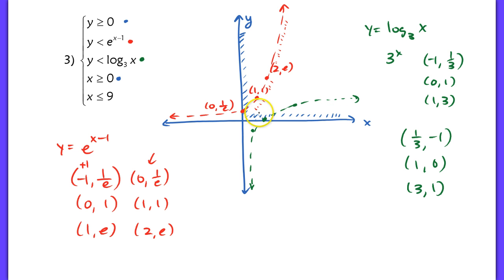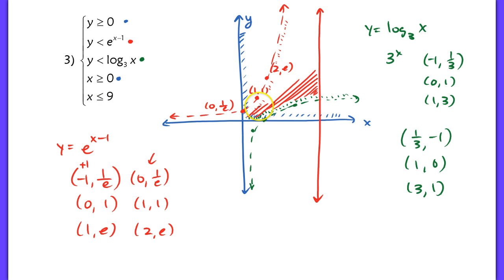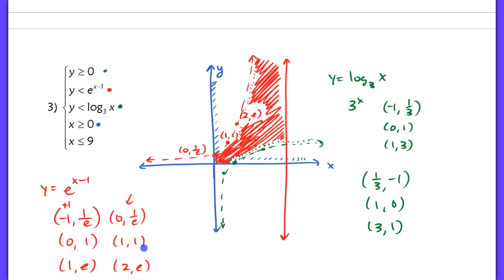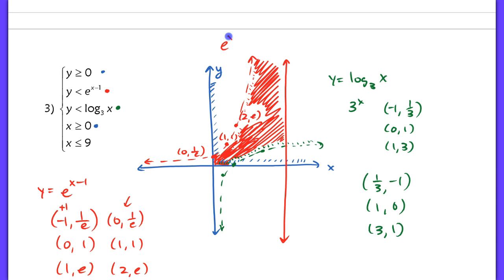Finally, y is less than or equal to 9. This is going to be a vertical line — solid — and it's shaded to the left. The overlapping feasible region is bounded inside here. It looks unbounded, but it is not, because eventually e to the x minus 1 will cross x equals 9. We need to find all corner points: there's one up here, one here, and a few others. We actually already have several coordinates — the y-intercept was (0, 1/e), the origin is (0, 0), and we have the point (1, 0). So I only have two coordinates left to find.